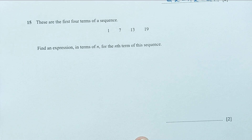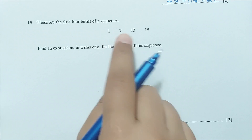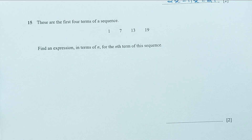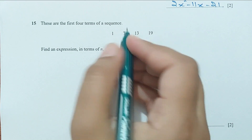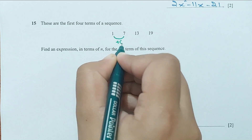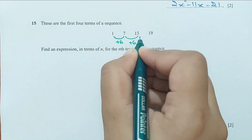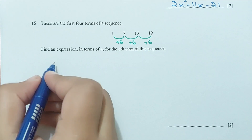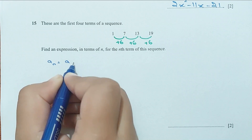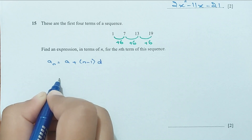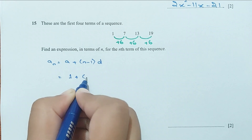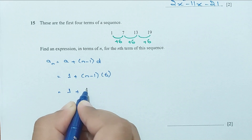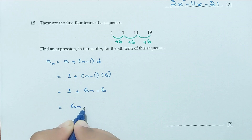Question 15: the first four terms of a sequence are 1, 7, 13, 19. Write an expression for the nth term. The common difference is 6, so it's an arithmetic sequence. Using the formula aₙ = a + (n − 1)d: aₙ = 1 + (n − 1) × 6 = 1 + 6n − 6 = 6n − 5.